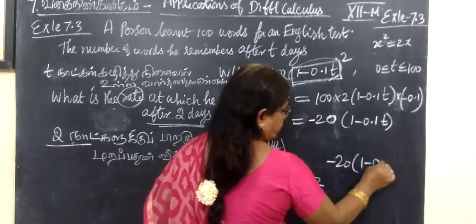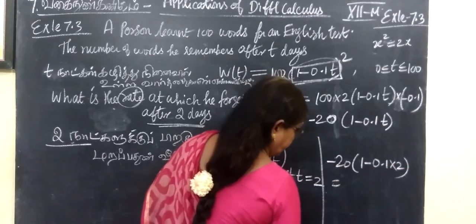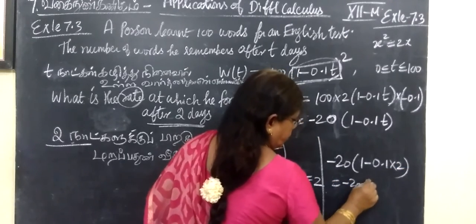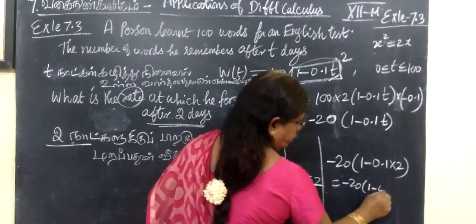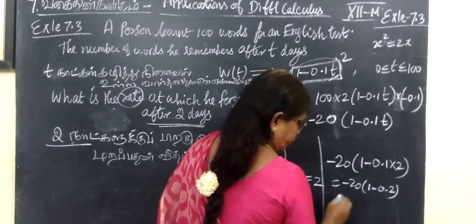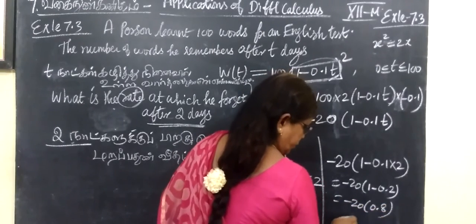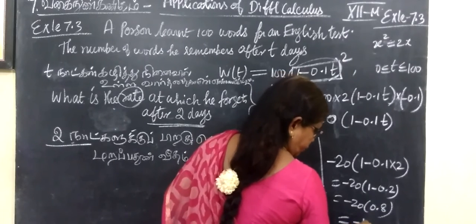1 minus 0.1 into 2, that is equal to minus 20, 1 minus 0.2. 0.1 into 2 is 0.2. This is 0.8. So equal to minus 16.